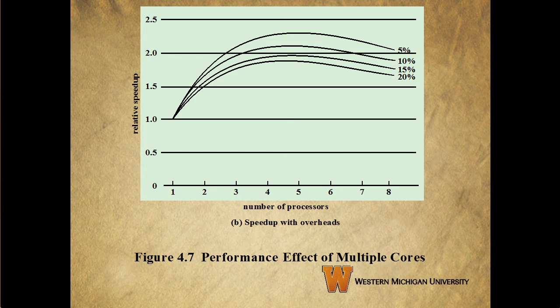Something else to keep in mind shown in this graph is that we can actually get to the point where we parallelize an application to the point of diminishing returns. This particular graph shows that we get our best speedup between 4 and 5 processors, but going all the way to 8 processors might actually give us less performance than less parallelization.